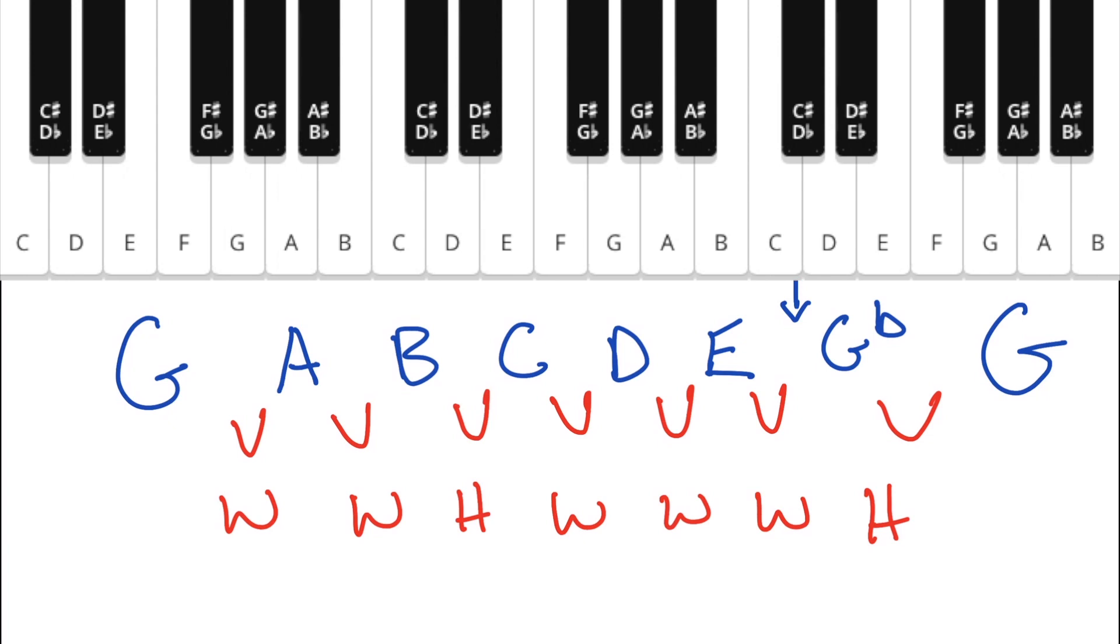And G flat G is going to make things really confusing. So instead of G flat G, we want to have one of every letter. So we're going to replace G flat with F sharp.